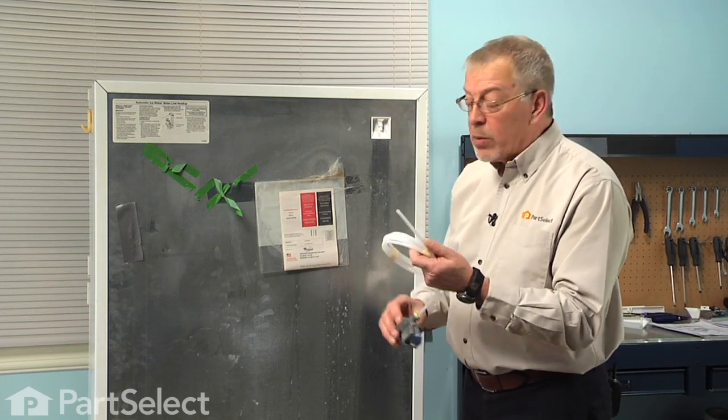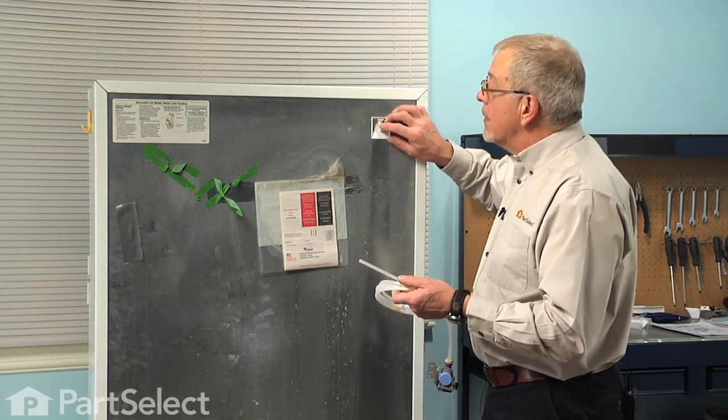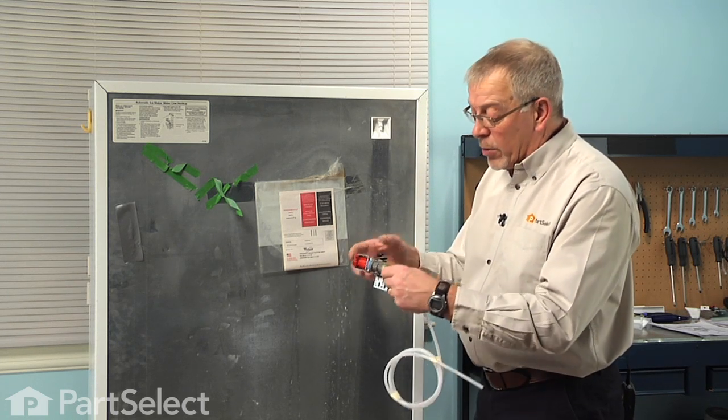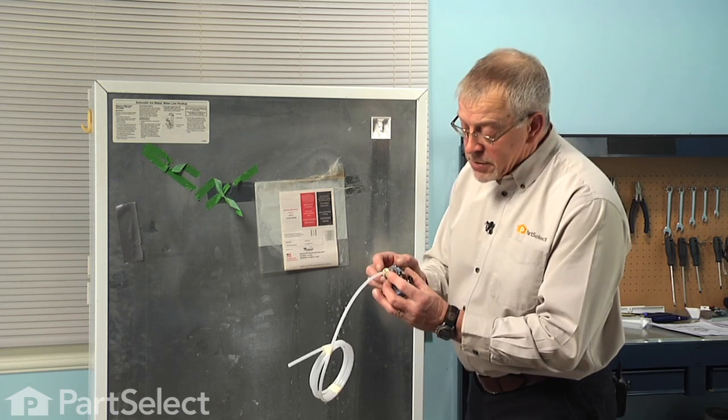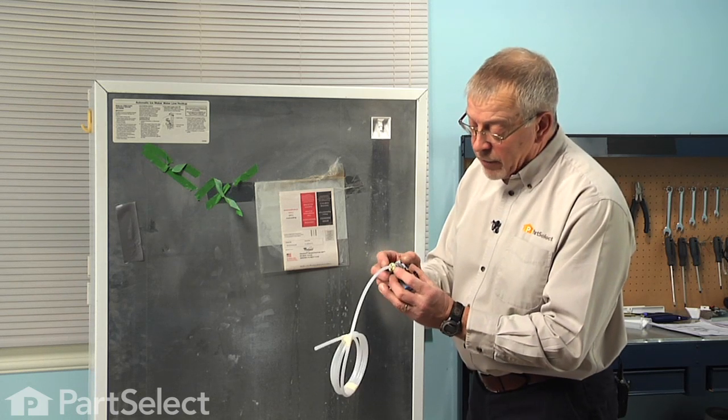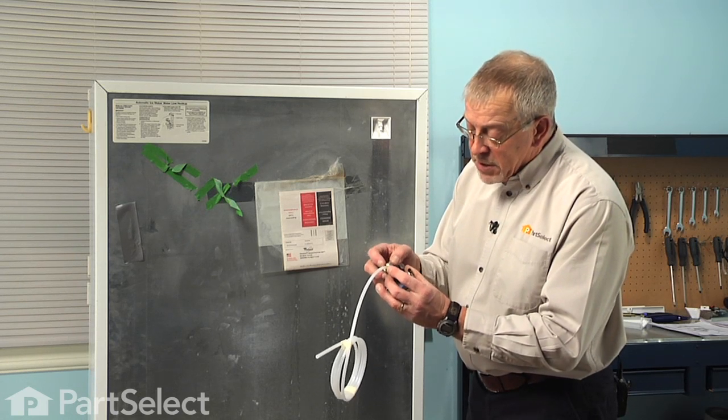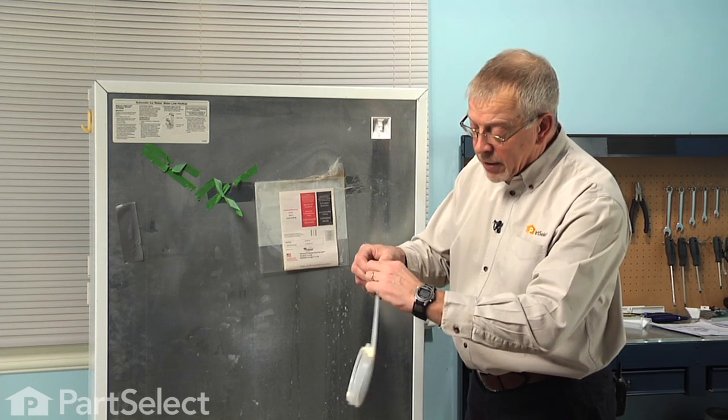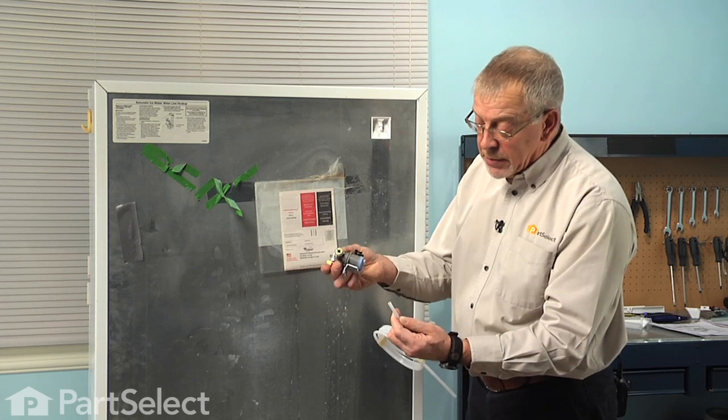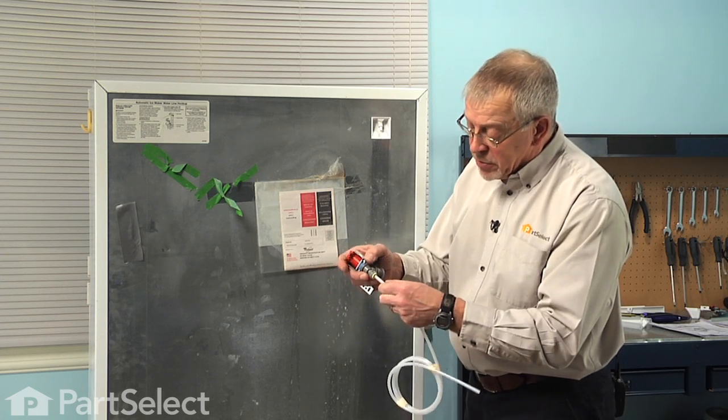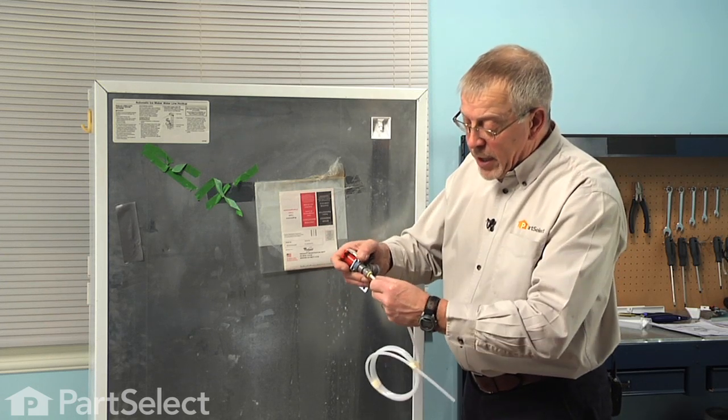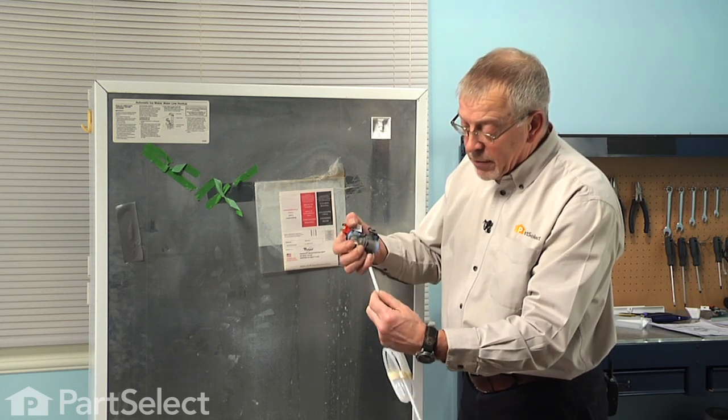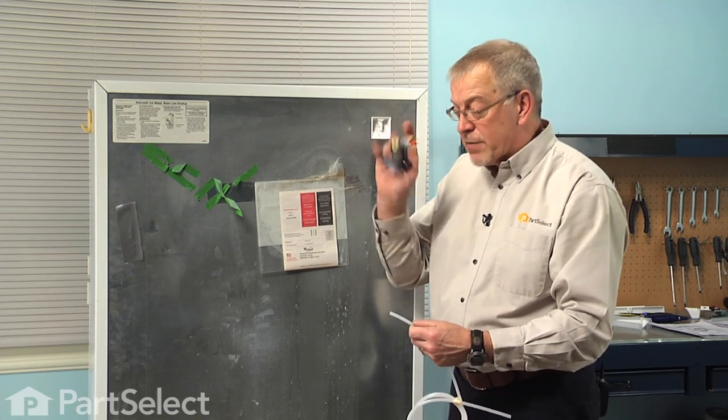Now next we're going to install the water line to the fill tube. Rather than have the valve hanging in the way here, we're going to disconnect it from the tubing. There's a little collet on the outlet of that valve. We simply depress that and pull it directly into the valve and hold it there, and then the tubing will just pull out. When we go to reinsert it, we're simply going to push it all the way in, pull it back out and it will lock in place. So just depress that little collet and pull the tube out, and we'll set the valve aside for now.